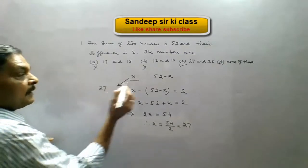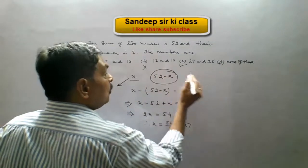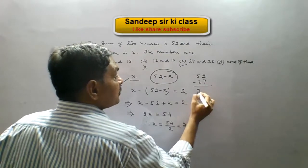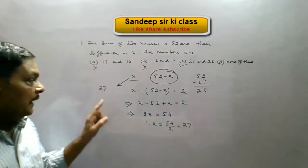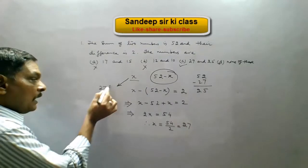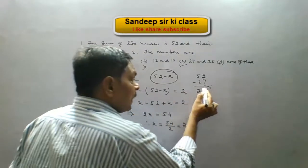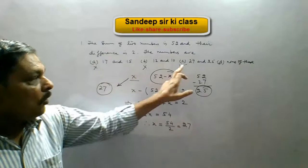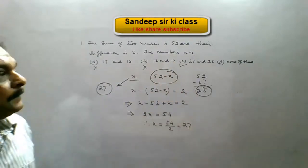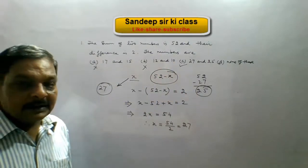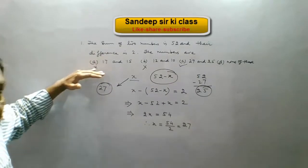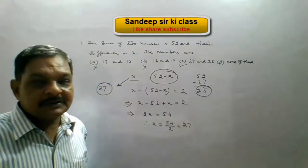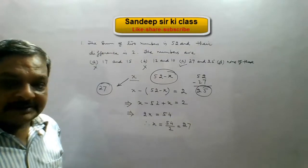When X is 27, the other number is 52 minus 27, which equals 25. Hence our two numbers are 27 and 25, and option C is correct. Generally, for such questions it is better to try from the options first.